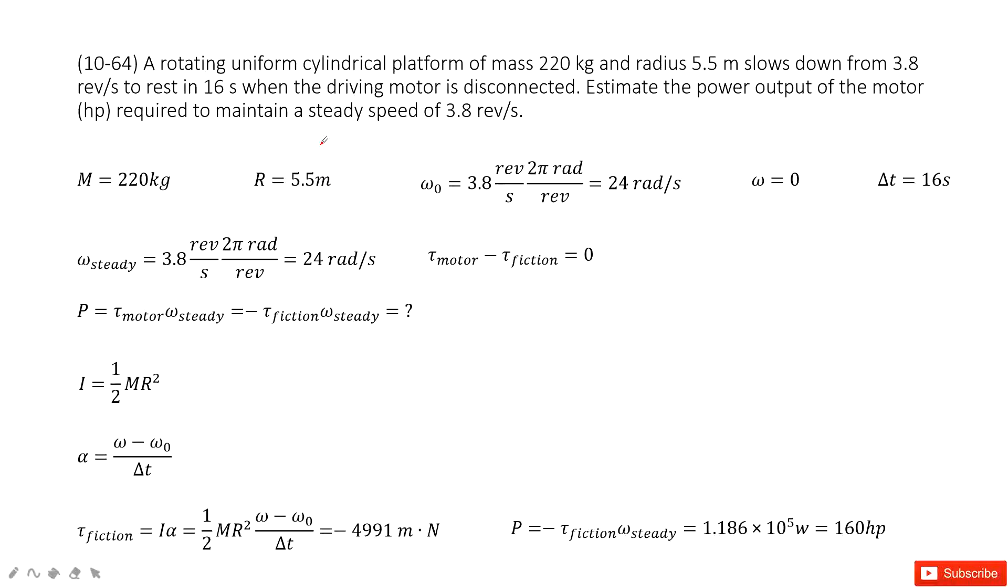First, we read the problem. It tells us it's a rotating uniform cylindrical platform. What does that mean? That means the size and shape of this motor, right? So we can find the momentum of inertia.